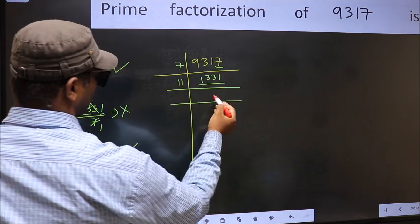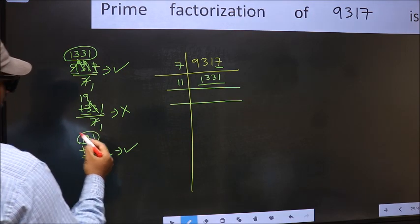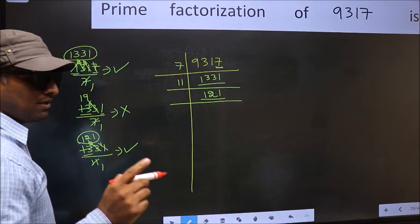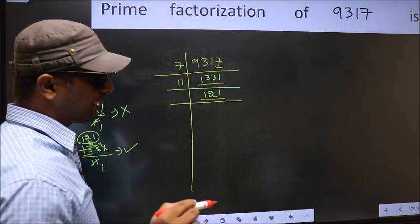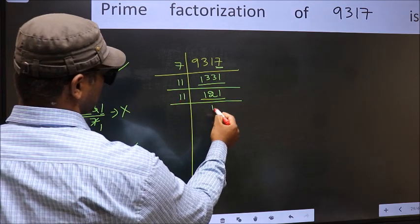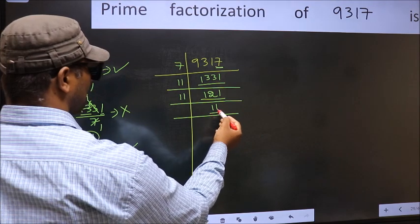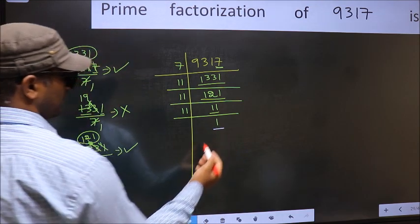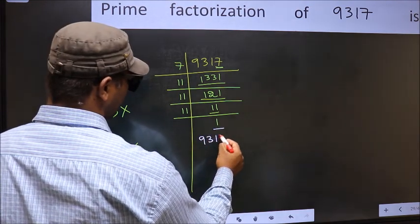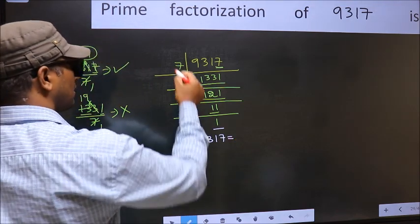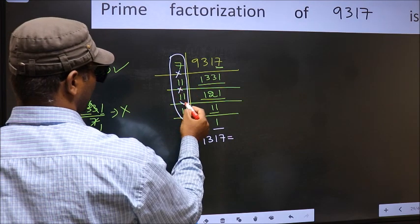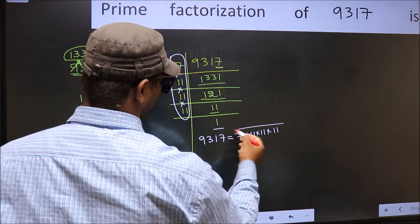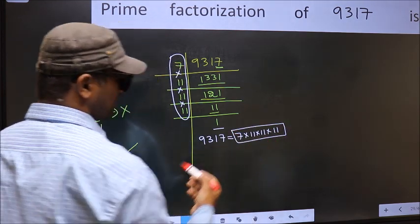So 11 here, and here we should write this number: 121. Now here we have 121. Always remember, 11 into 11, 121. That is 11 times 11 is 121. Now we have 11, 11 is a prime number. So 11 once 11, so we got 1 here. So the prime factorization of 9317 is the product of these numbers. That is 7 into 11 into 11 into 11. This is the prime factorization of 9317.